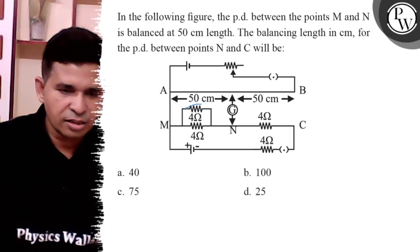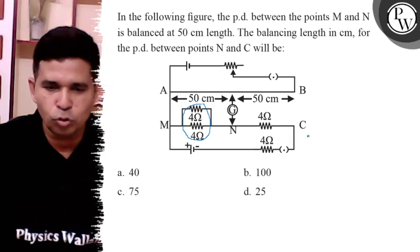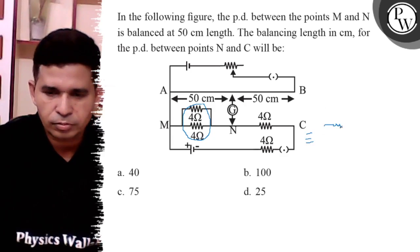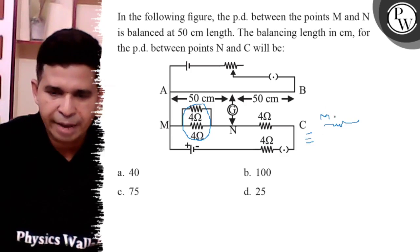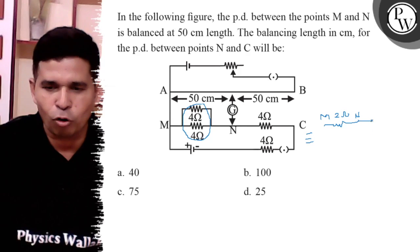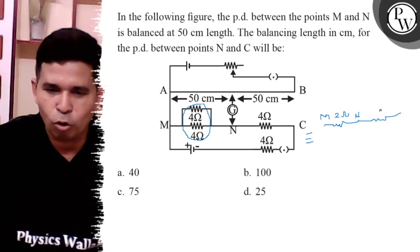Here the resistance is 2 Ohm from M to N because it is the parallel combination of 4 Ohm, and it is 4 Ohm from N to C.